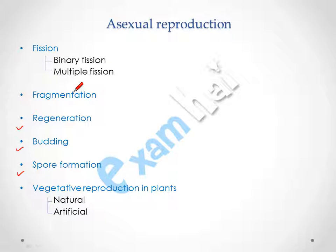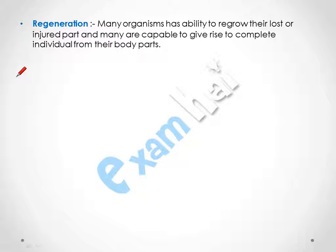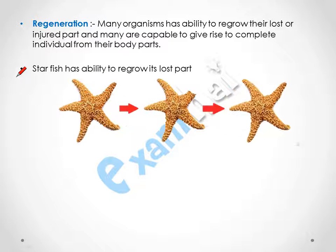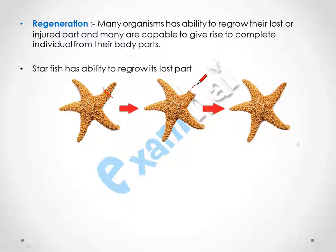As we have discussed fission and fragmentation in our previous video. So what is regeneration? Many organisms have the ability to regrow their lost or injured parts, and many are capable of giving rise to a complete individual from their body parts. For example, if we take a starfish, as shown in this diagram, if a starfish loses one arm it can regrow or develop a new arm.